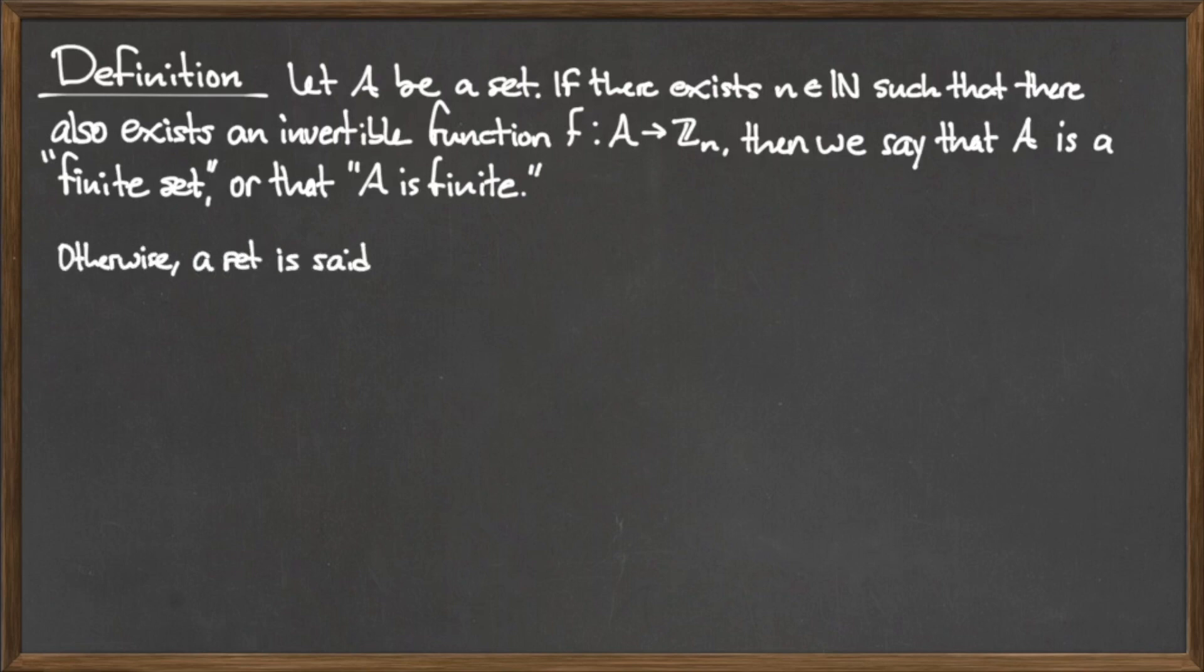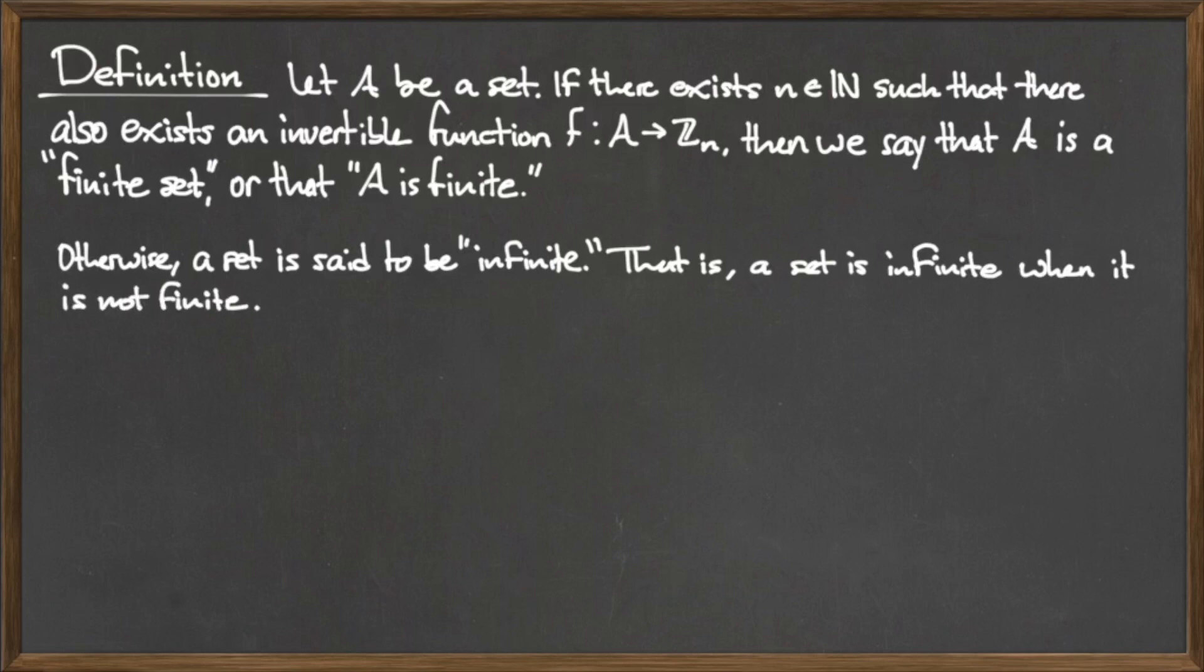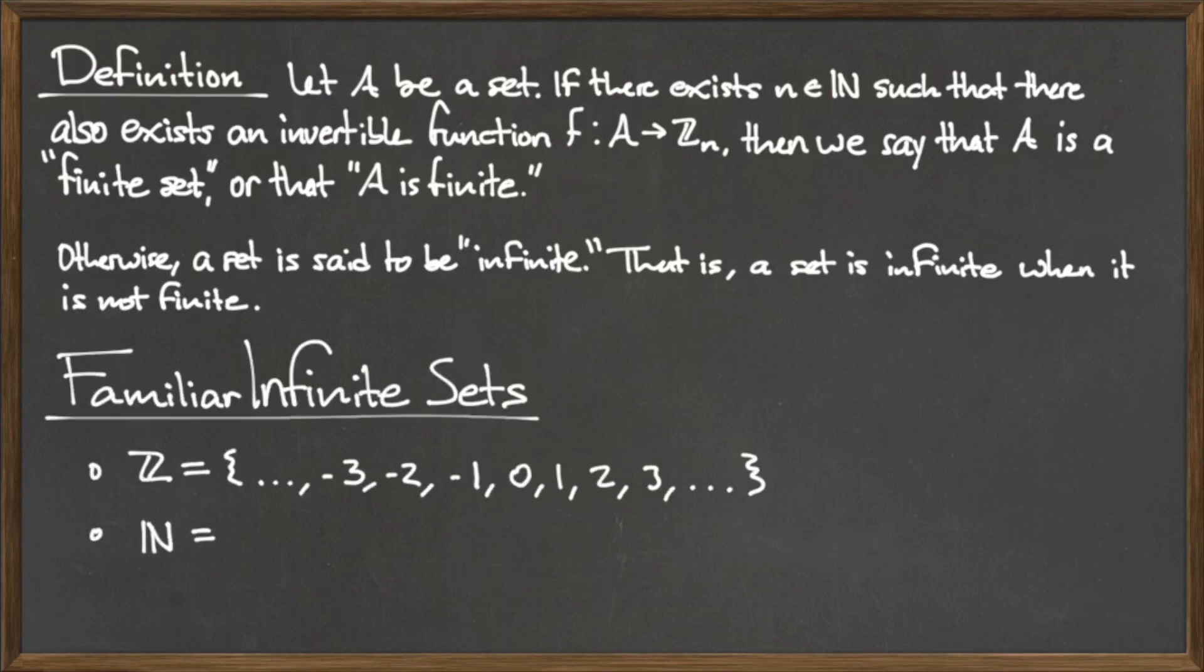If such a function does not exist, then we say a set is infinite. In other words, a set is infinite when it is not finite. Some familiar infinite sets include the integers, the natural numbers, and the non-negative even integers, but there are many others.